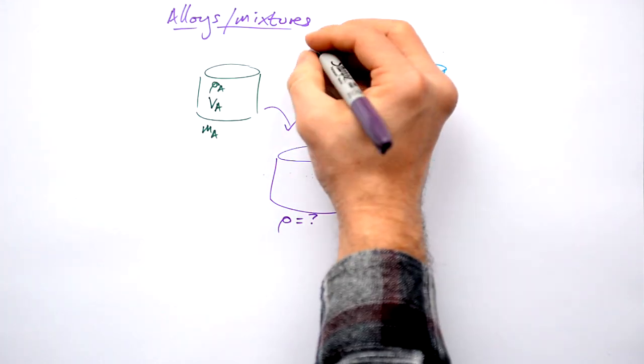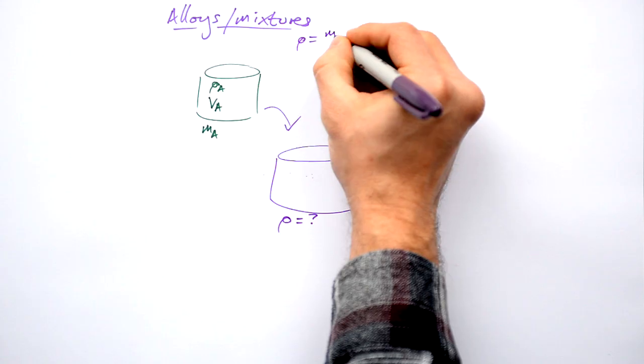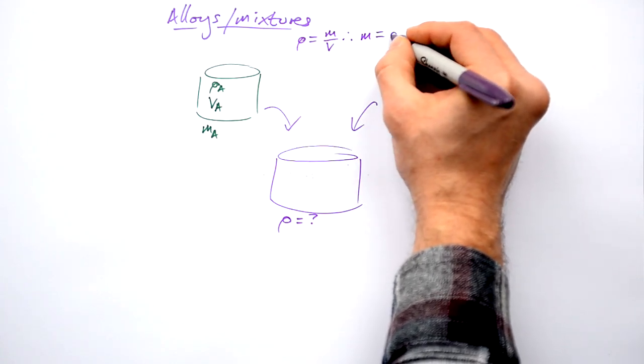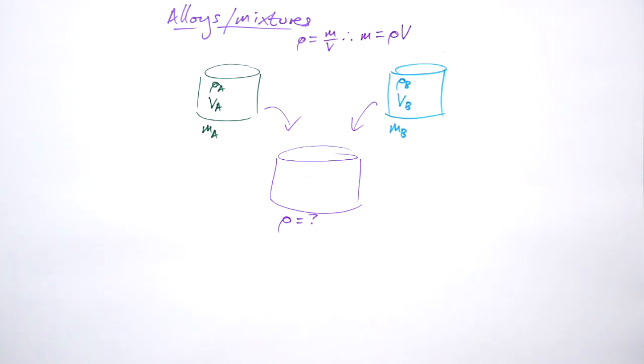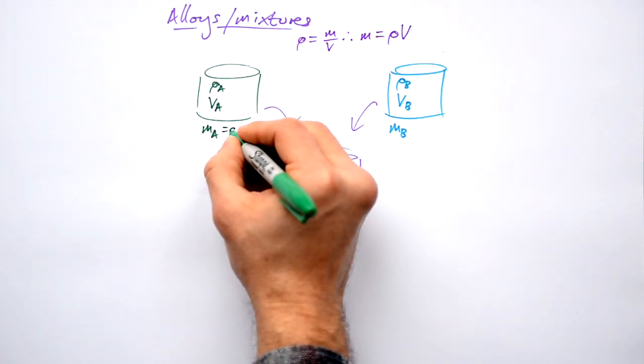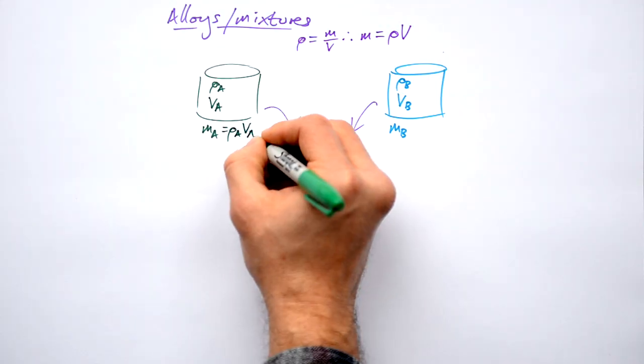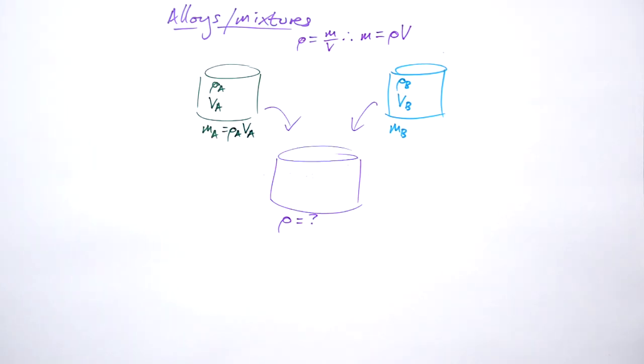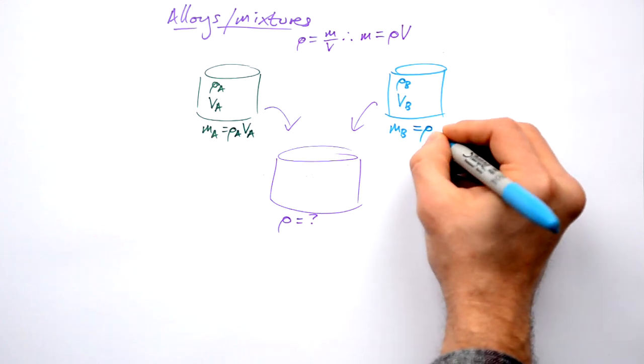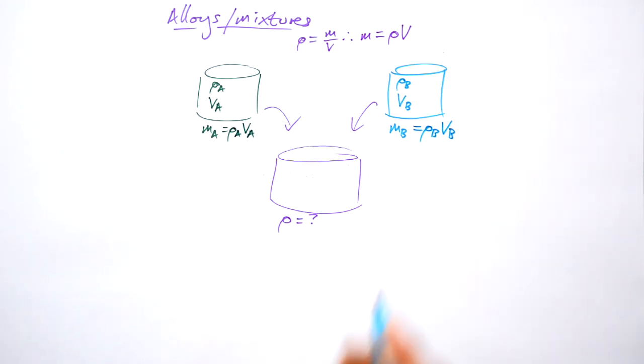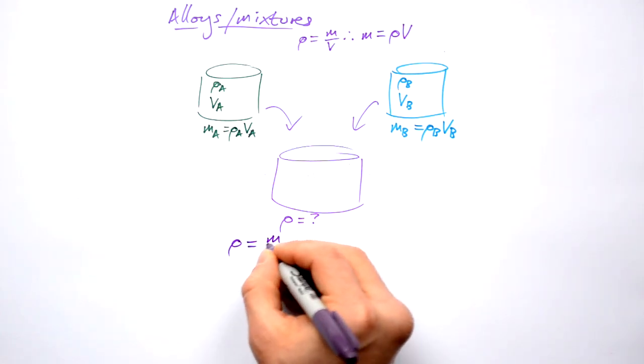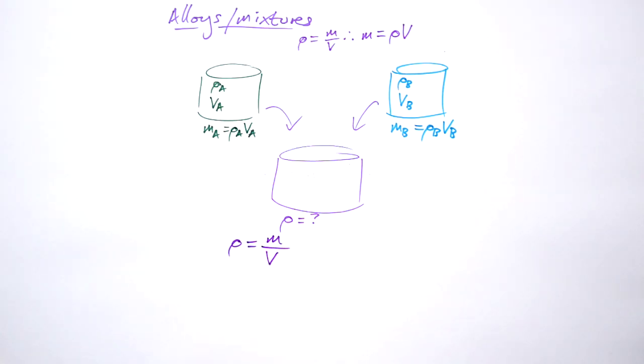Well we know from earlier that density equals mass divided by volume. So that must mean that mass equals density times volume. So that's the case for these two here. The mass of A is density times volume of A. Mass of B is equal to density times volume of B. So the density of this material is going to be the total mass divided by the total volume.